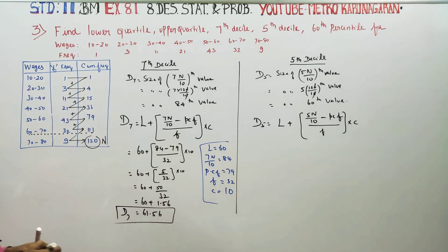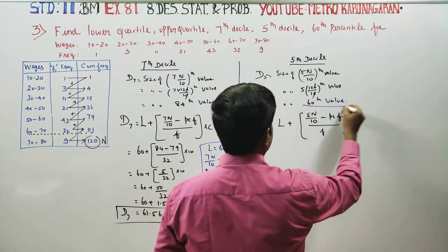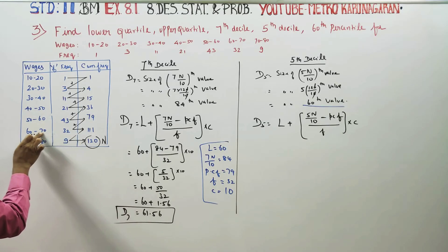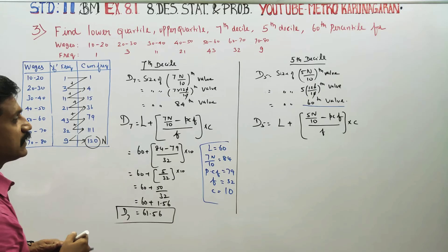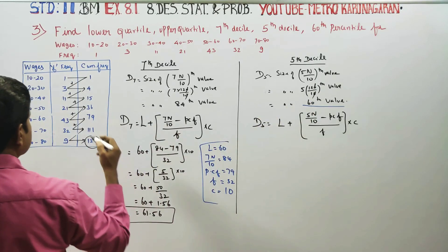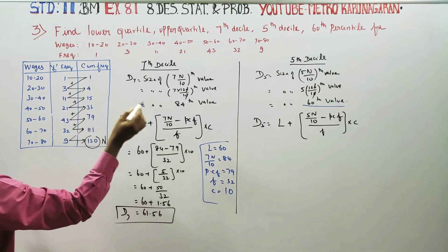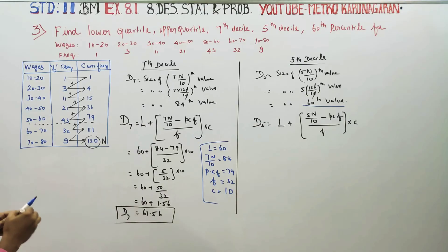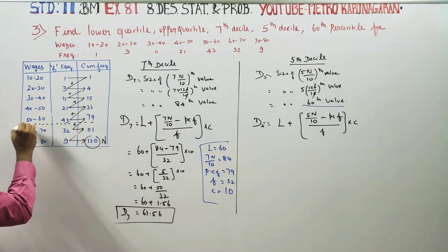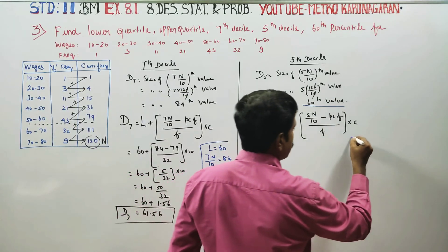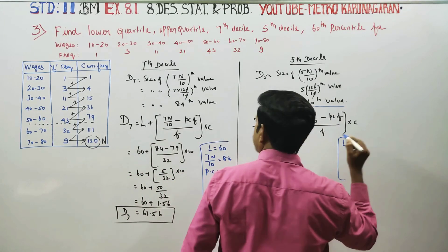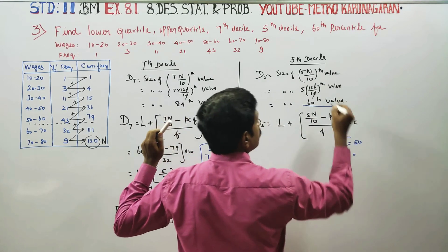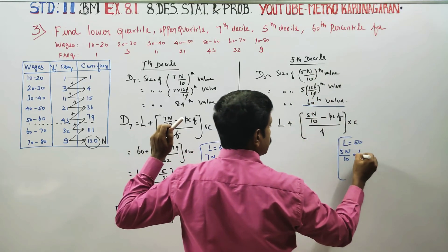D5 corresponds to the 60th value. D7 corresponds to the 84th value. Looking at the cumulative frequency table, the lower interval L is 50. So we mark it. L is 50. For D5, 5N by 10 equals 60.